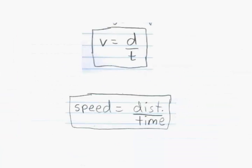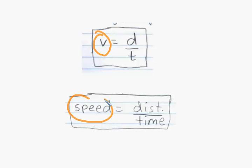The equation to solve time, distance, and speed problems are shown right here. There are actually two versions of it. The top one is velocity equals distance over time, and the bottom one is speed equals distance over time. They're essentially the same equations. Velocity here, v, is the letter we use in equations for speed — so velocity and speed, v and speed.